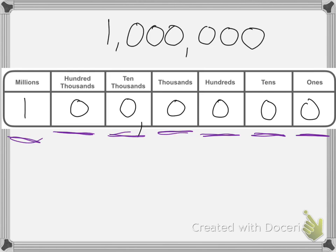So this number is one million. Now, if I wanted to write the number three million, I would put a three in the millions place. And this number would be three million.